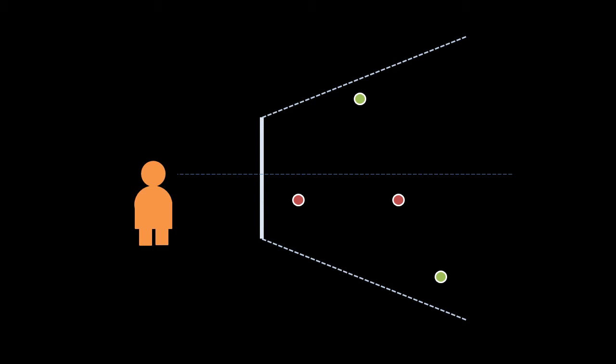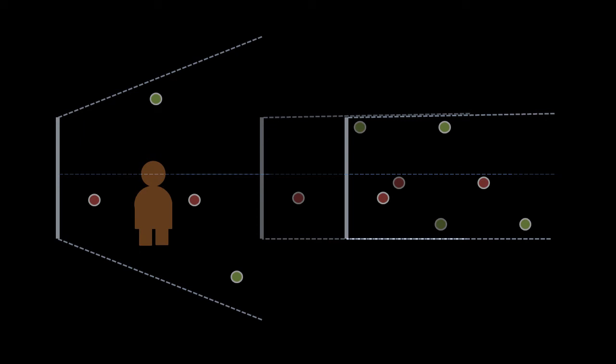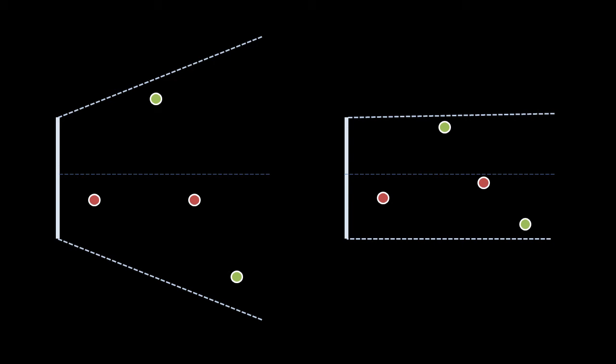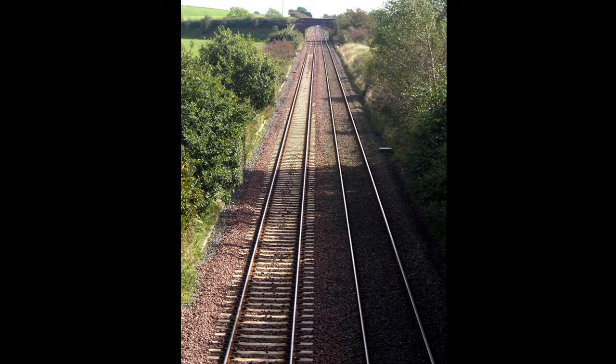Another way of thinking about this process is that we are squeezing the observer's field of view into a rectangle, such that all points in our field of view get squeezed along with it. Points farther back from the window and farther from the center axis get squeezed proportionally more. Because we're going for a rectilinear projection, we squeeze the vertical and horizontal axes separately — one before the other — instead of at the same time, which would produce a curvilinear projection. Looking down train tracks, the parallel lines of the rails converge to a point in the distance — exactly this effect.